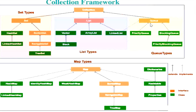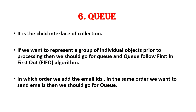The Queue interface is the child interface of Collection. If we want to represent a group of objects prior to processing, we should go for Queue. Queue follows the First In First Out (FIFO) algorithm. For example, if we want to send emails in the order we added email IDs, we should go for the Queue concept.